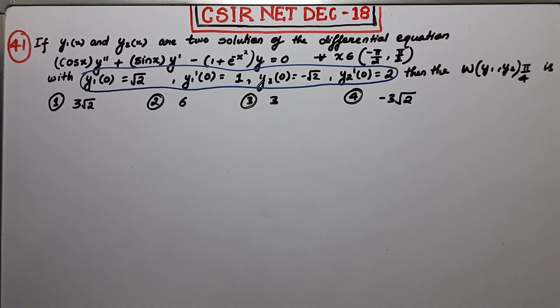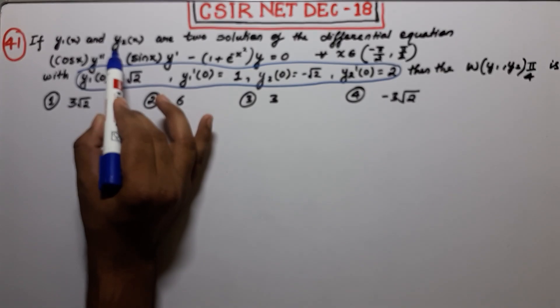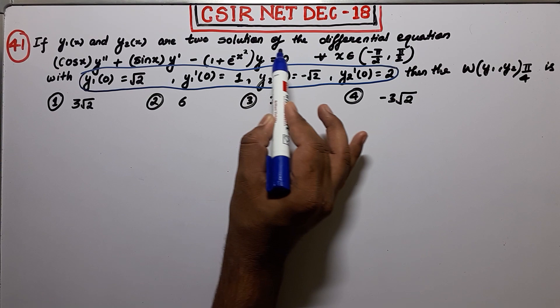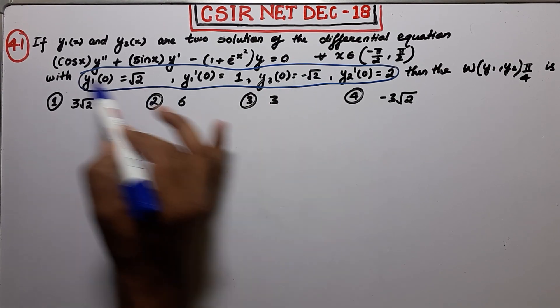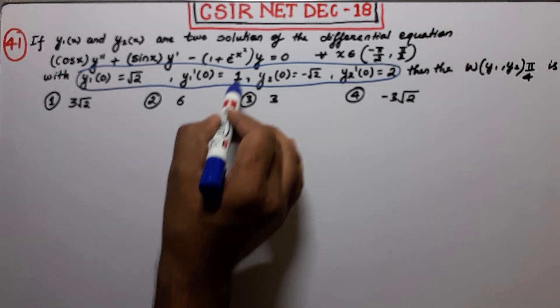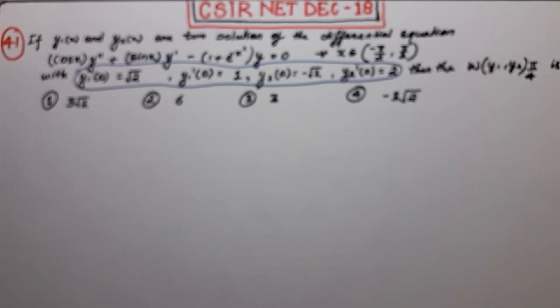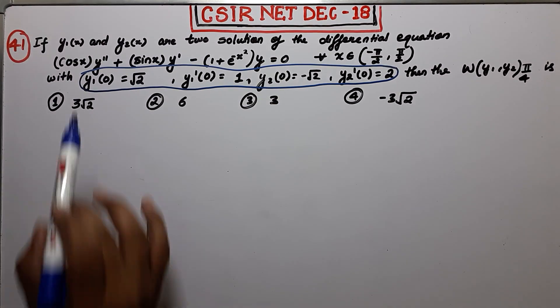Welcome guys. This is question 41 of NET December 2018, a question from ordinary differential equations, part B. The problem states: if y1 and y2 are two solutions of the ODE cos(x)·y'' + sin(x)·y' + q(x)·y = 0, on the open interval (-π/2, π/2), and we have four conditions given.